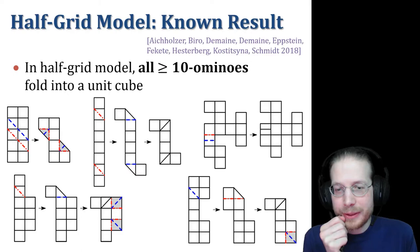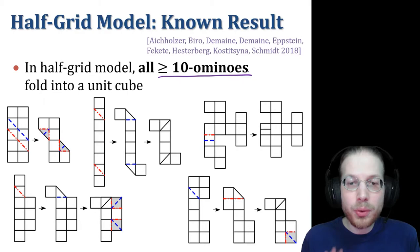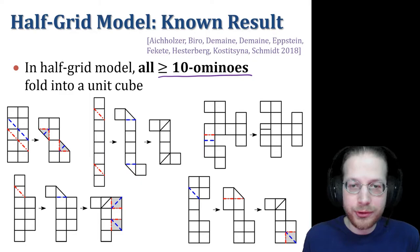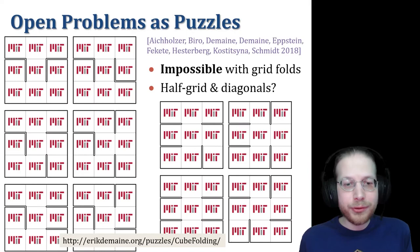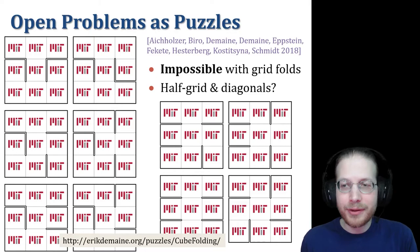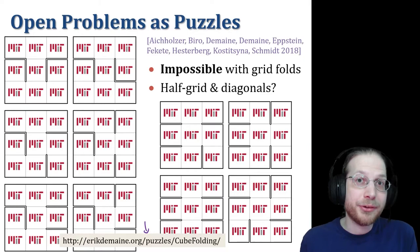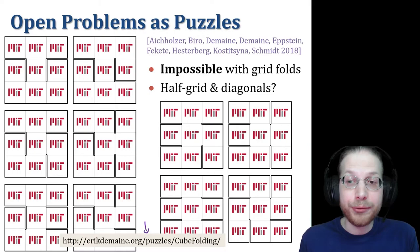And furthermore, there are no shapes of size 9 that are interesting other than the 3x3 square. Everything else can fold via grid and diagonal folds into a cube. So these are the 10 remaining nanominoes. Open problem from this paper is what about the half-grid model? We had one example that we knew that if we added these half-grid folds, this particular example could fold into a cube, but we didn't know about the other 9.